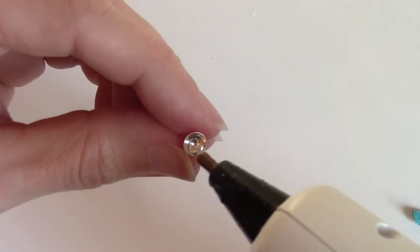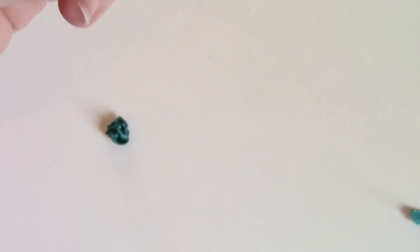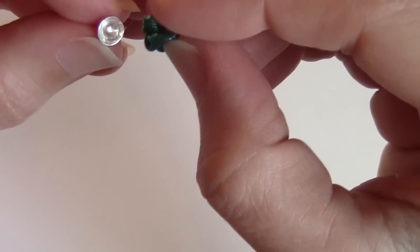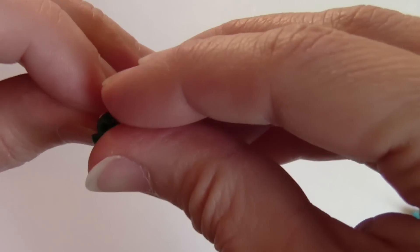Okay, and then we're going to put a little dollop of glue inside the cup of the earring post and pop in your rose.